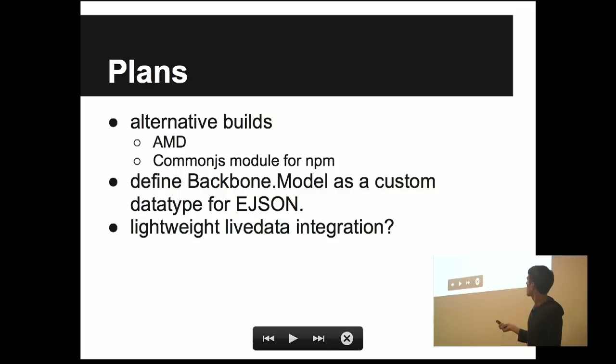In terms of future plans for it, I want to make a few alternative builds available, like an AMD module for RequireJS or LoadRunner, a CommonJS module so people can just install this and run it in Node. And then other things are more abstract, like I want to explore defining Backbone.Model as a custom data type for EJSON, which is probably what I would have done from the start looking back on it. And then a lightweight Live Data integration could be cool so that people could have an in-memory Backbone data store kept in sync with one in the browser just as an NPM module, and just very lightweight.